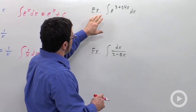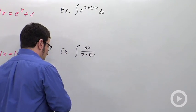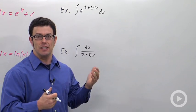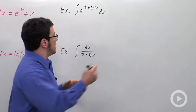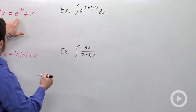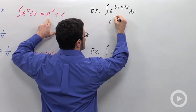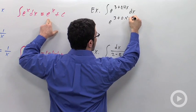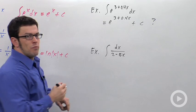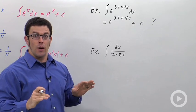For example, integrating e to the 3 plus 0.4x. And this is not exactly the same as e to the x. But some people might be tempted to just say, well, using this formula, it would be e to the 3 plus 0.4x plus c. But I want to show you that this is not correct.